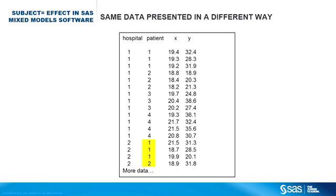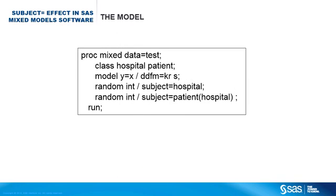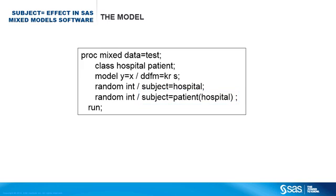Now suppose the data are presented in a different way. The values for patients are not unique — the values 1, 2, 3, 4 are reused for different hospitals, and these values refer to different patients from different hospitals. Here, you must nest patients within hospital to let the procedure know that patient 1 from hospital 1 is a different patient than patient 1 from hospital 2. So in this case, nesting is necessary.